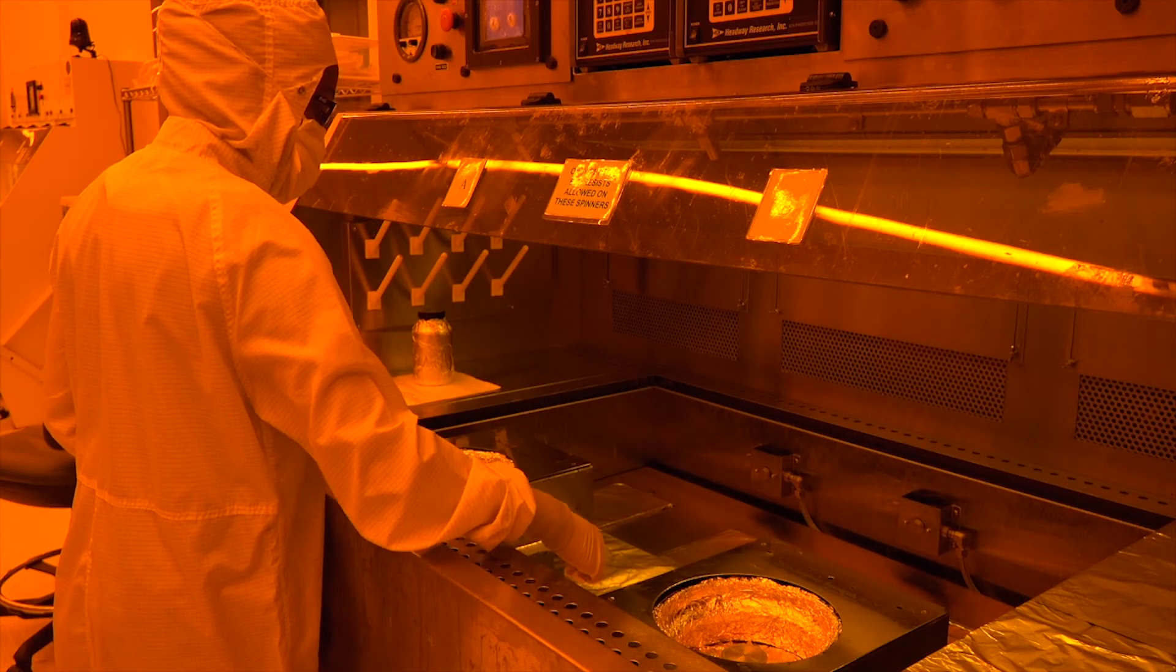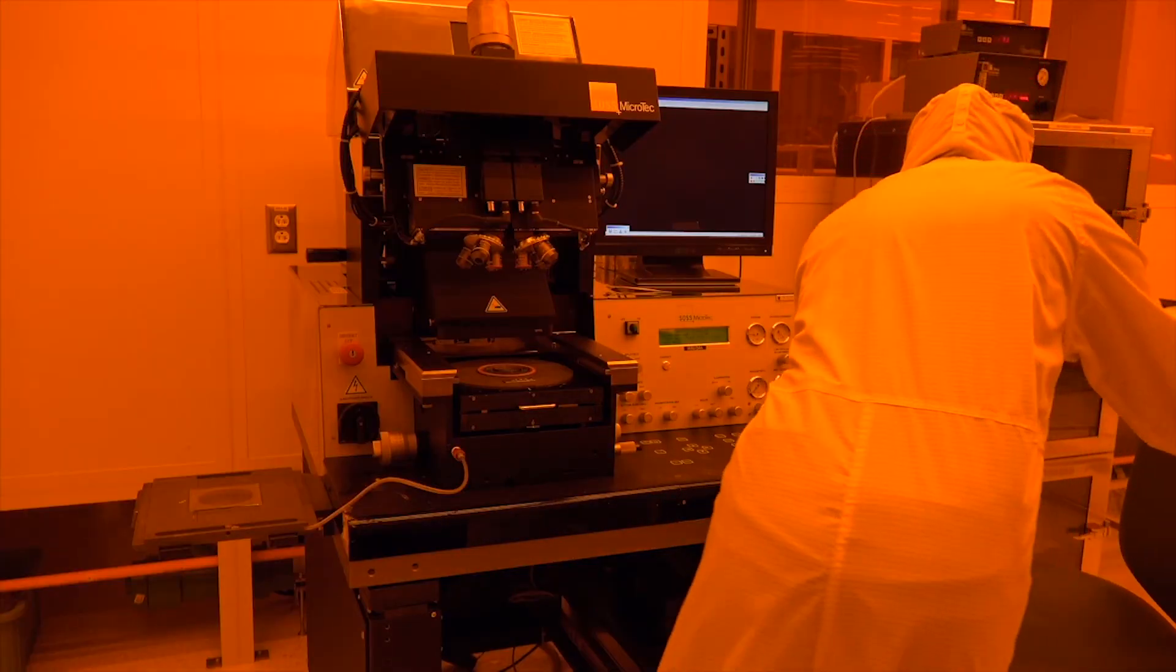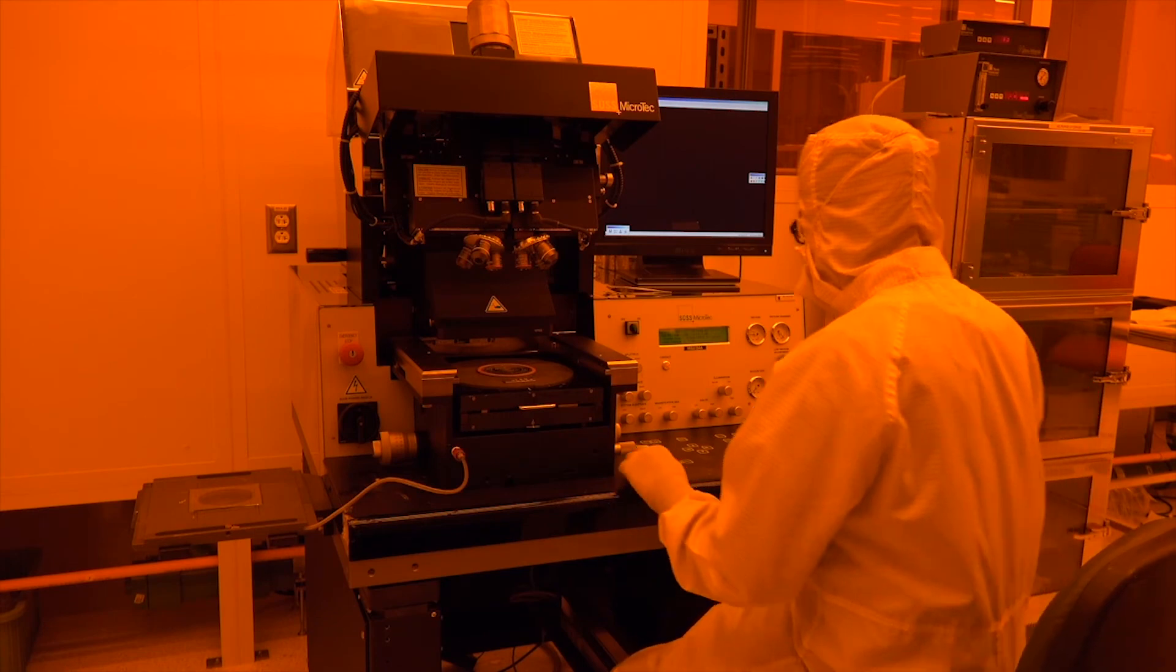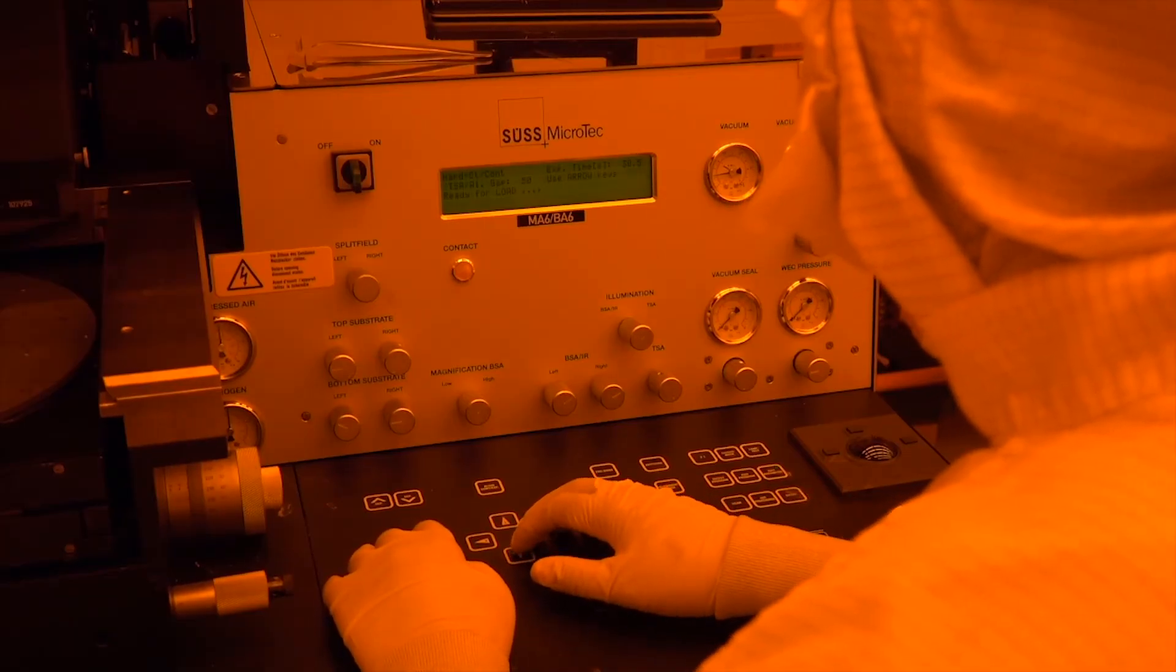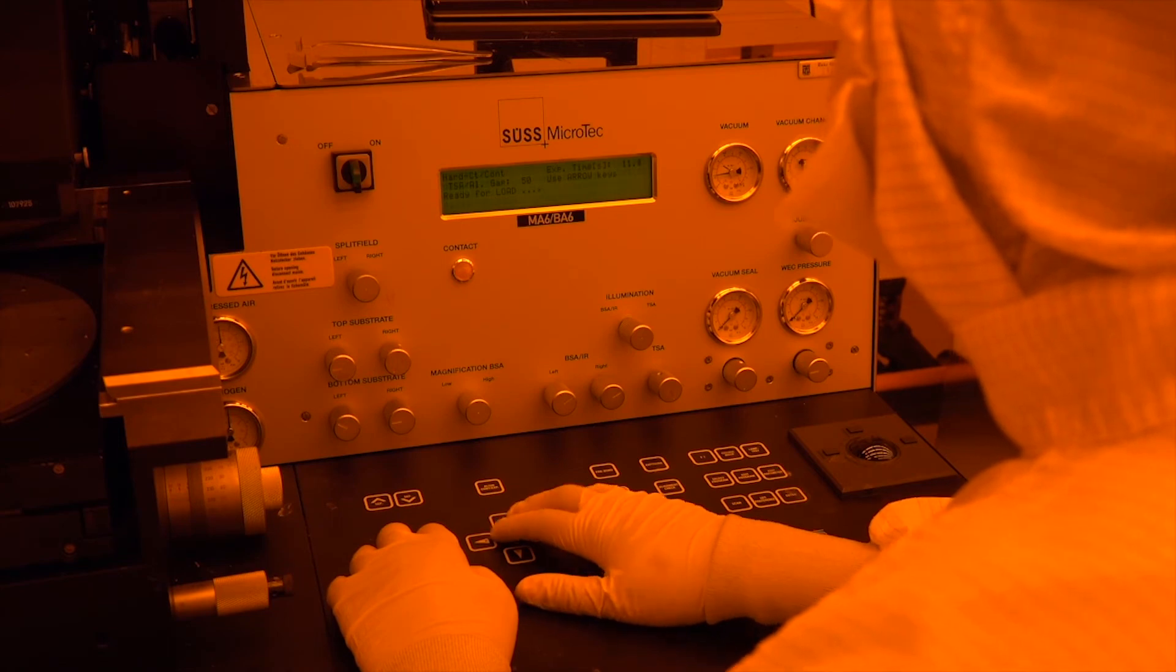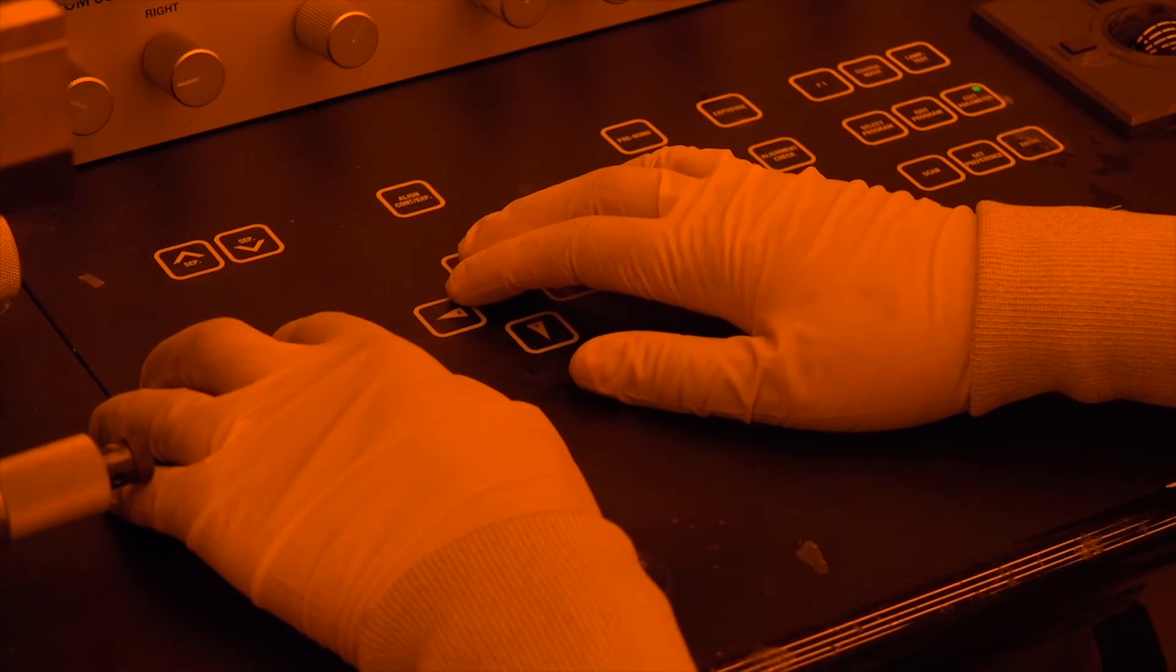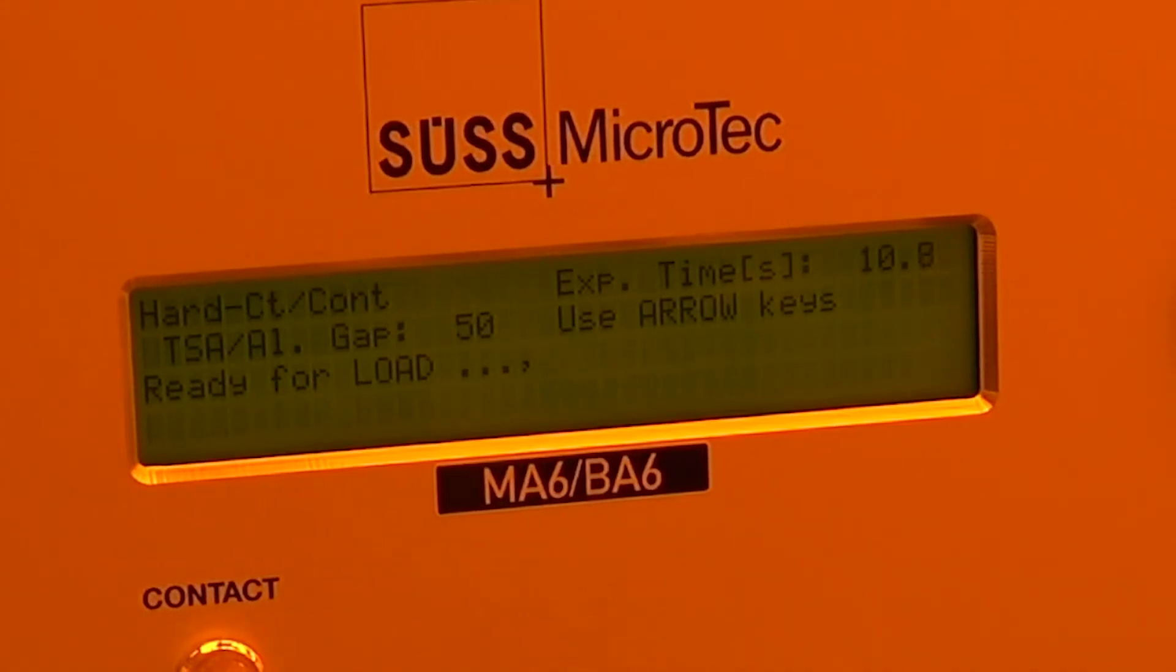To pattern the wafer, we use a photolithography tool. This tool holds the wafer in place, aligns and contacts the photomask to the wafer, and illuminates the photomask and substrate with ultraviolet light. Let's go through these steps now. First, we program the desired exposure time into the instrument. Different processes require different exposure times. The exposure time is the amount of time we will illuminate the wafer with UV light. For this example, we will use 11.5 seconds.